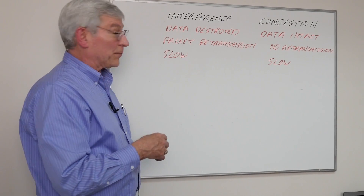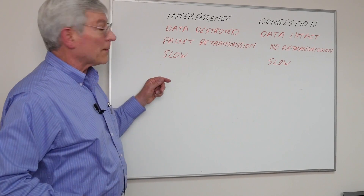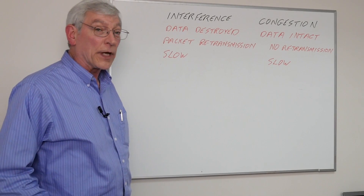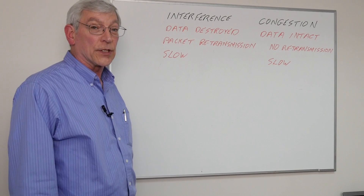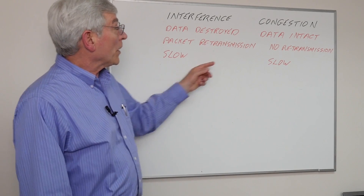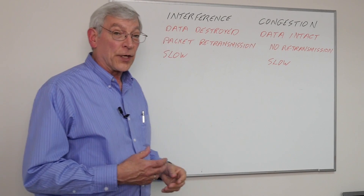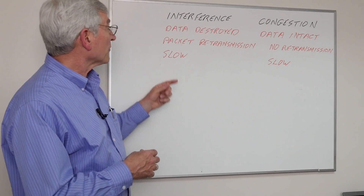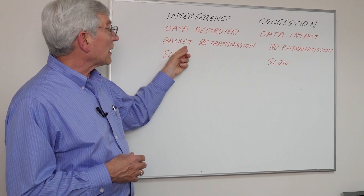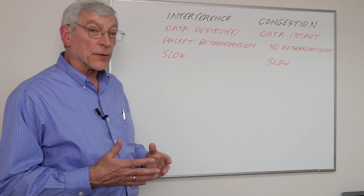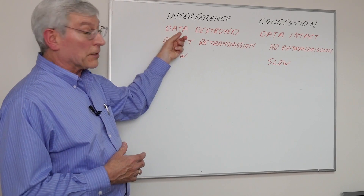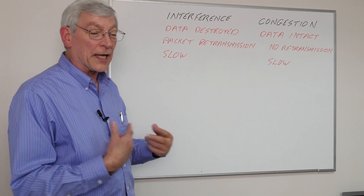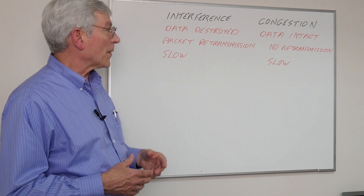Up here I've drawn a couple of points for you to see. Let's talk about the data first. With interference, the data packets are destroyed — we can't decode the ones and zeros of the information. We're very likely to have packet retransmission, because the ones and zeros that were destroyed and corrupted by the interference have to be resent in order for the receiving end to have all of the information.